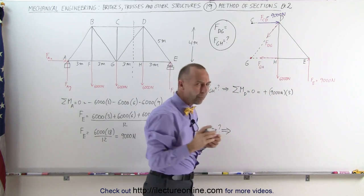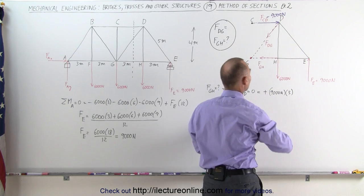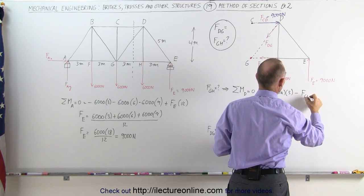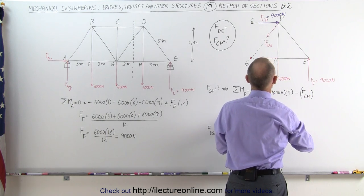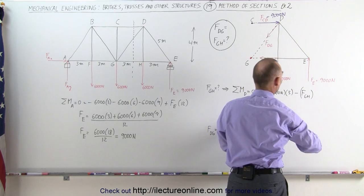And would that be a negative or a positive force? Well, this causes a clockwise torque about point D. That means it's a negative force between G and H, multiplied times the distance from the line of action of the force to the pivot point here, that would be a 4 meter distance.